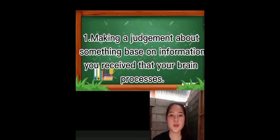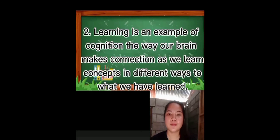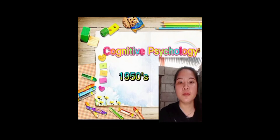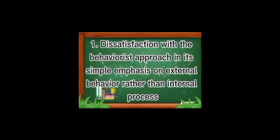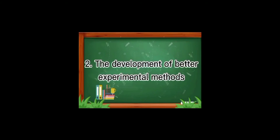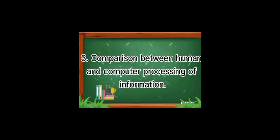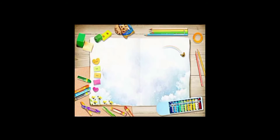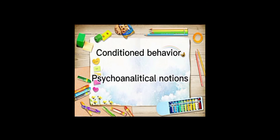Examples of cognitive psychology include: number one, making a judgment about something based on information you receive that your brain processes; number two, learning is an example of cognition — the way our brain makes connections as we learn concepts. Cognitive psychology became of great importance in the mid-1950s. Several factors were important: first, dissatisfaction with the behaviorist approach and its simple emphasis on external behavior rather than internal processes; second, the development of better experimental methods; third, comparison between human and computer processing of information. The emphasis of psychology shifted away from conditioned behavior and psychoanalytical notions toward the understanding of human information processing.